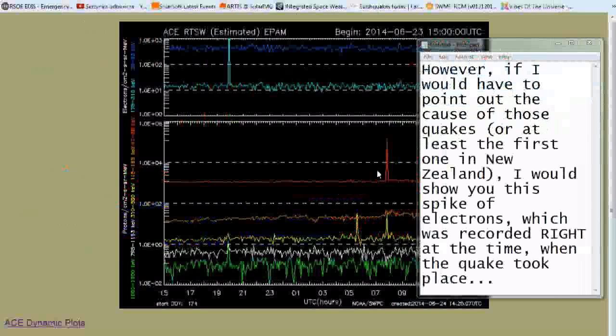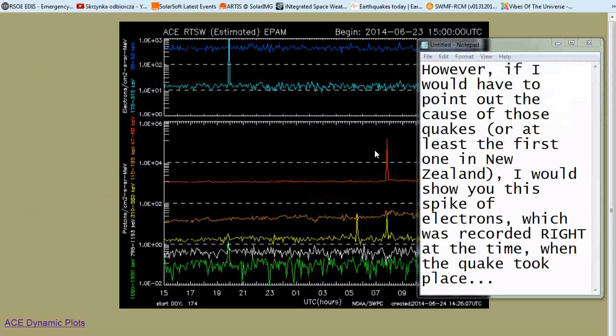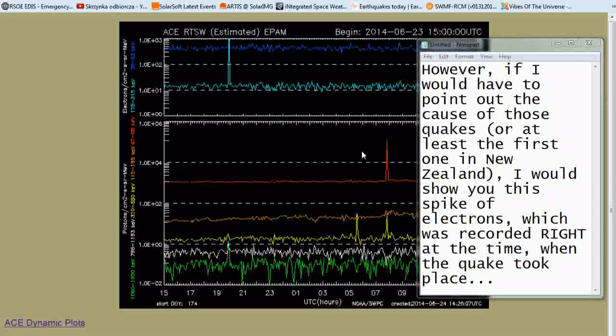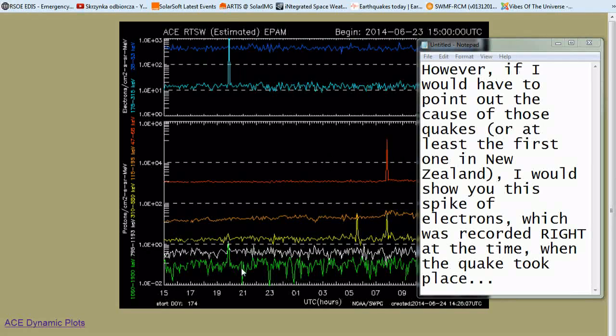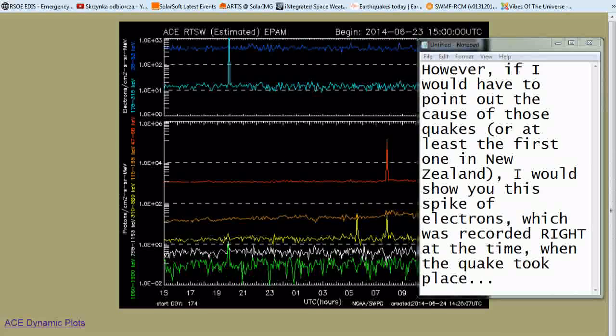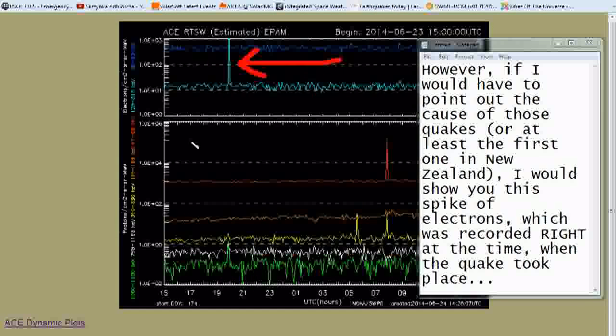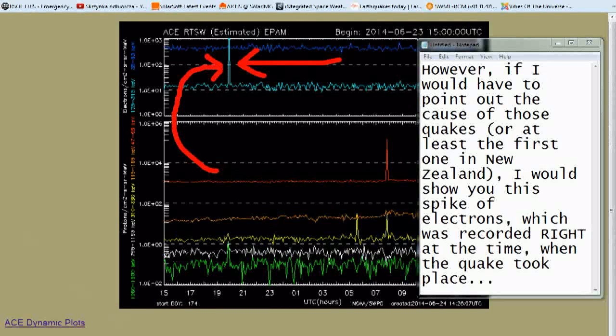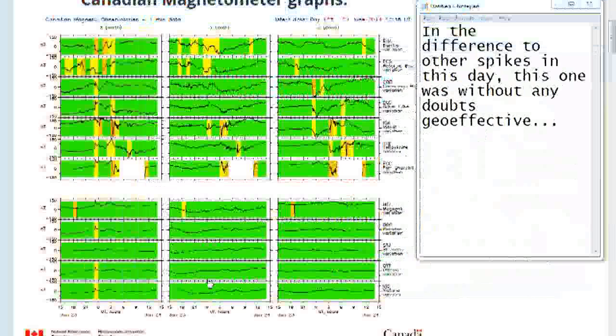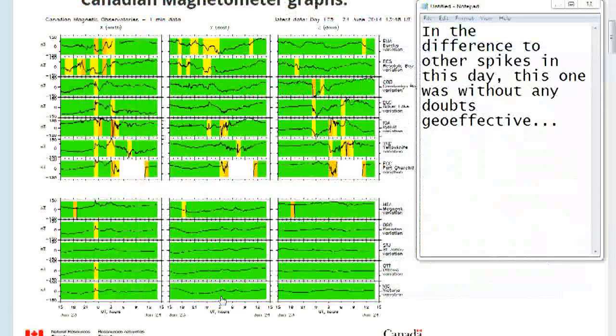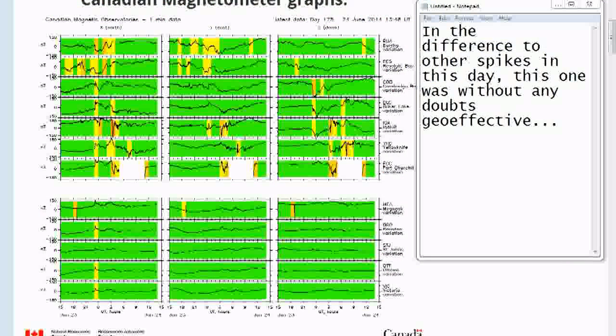However, if I would have to point out the cause of those quakes, or at least the first one in New Zealand, I would show you this spike of electrons, which was recorded right at the time when the quake took place. And the difference to other spikes in this day, this one was without any doubts geo effective.